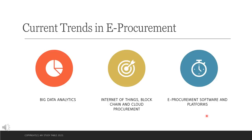E-procurement software manages contracts, analyzes spend, and purchases goods. Platforms enhance engagements between vendors and consumers to improve efficiency and accountability and help reduce the total cost. For example, for government-related projects, large-scale procurement is routed through the GEM platform, enabling time and cost efficiencies.